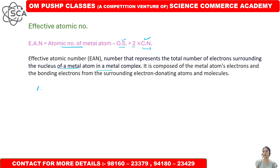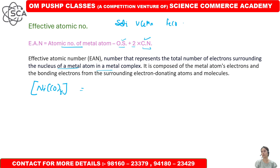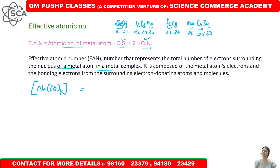Let's take an example: Ni(CO)4. We need to calculate the EAN. The atomic number of nickel is 28. For reference, the atomic numbers of transition metals are: Scandium 21, Titanium 22, Vanadium 23, Chromium 24, Manganese 25, Iron 26, Cobalt 27, Nickel 28, Copper 29, Zinc 30.